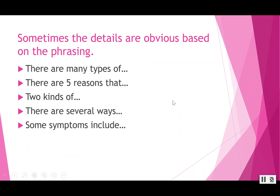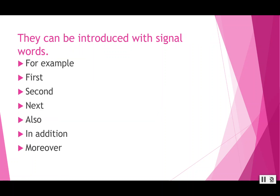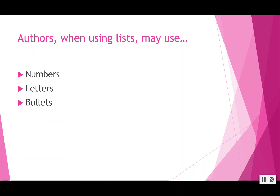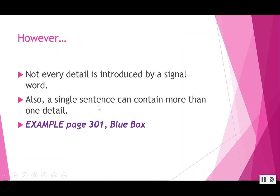Sometimes the details are obvious based on the phrasing — phrases like 'there are many types of,' 'there are five reasons that,' 'two kinds of,' 'there are several ways,' or 'some symptoms include' signal a list of supporting details. They can also be introduced with signal words like first, second, next, also, in addition, or moreover. If the author is listing things you might see numbers, letters, or bullet points. However, not every detail is introduced by a signal word, and a single sentence can contain more than one detail. We'll look at an example of that in the blue box on page 301 in video number two.